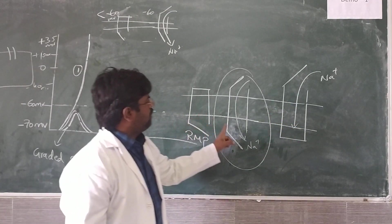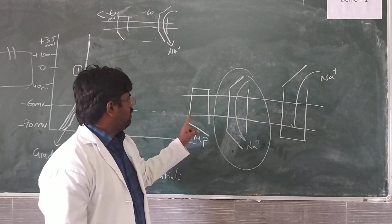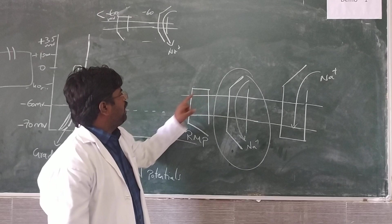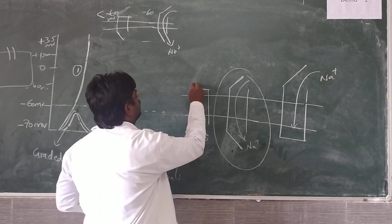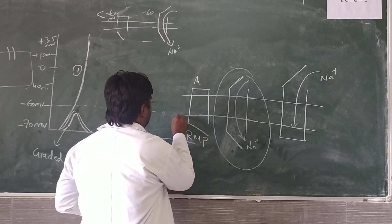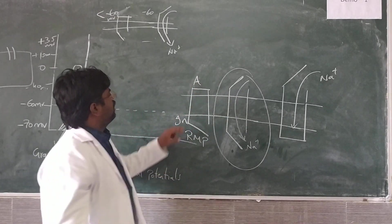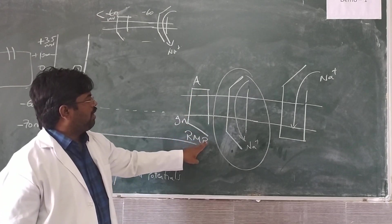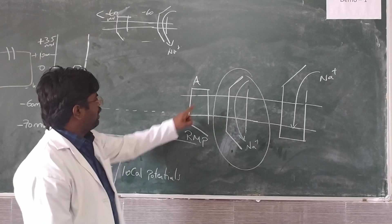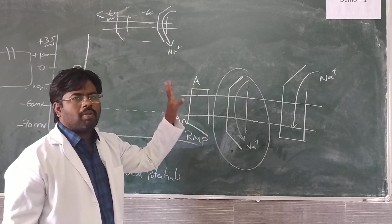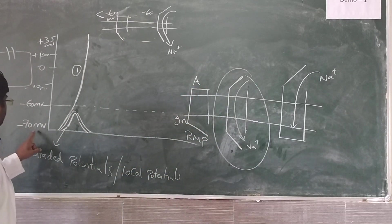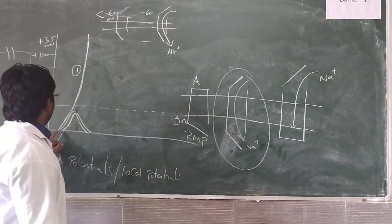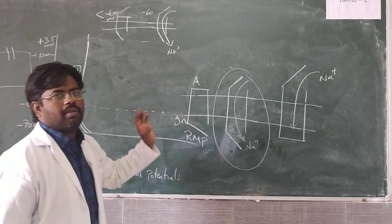If you observe these channels very carefully, during the resting membrane potential, the active gates are closed and the inactive gates are open. By this, there is no entry of sodium ions — that is what we have seen in resting membrane potential. That is why there is no elevation or depression; it is in the resting state.